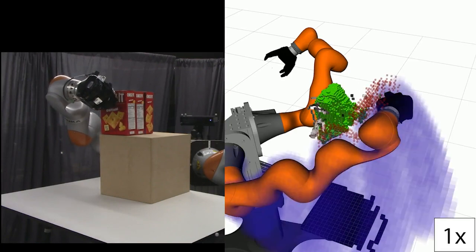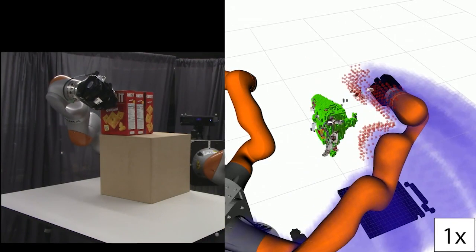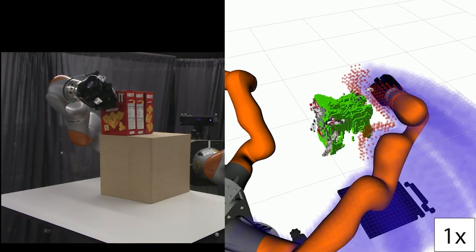While this network has seen a Cheez-It box in training before, it has never seen this exact stack of three boxes together. After the robot contacts the boxes, the completions grow to explain the contact.